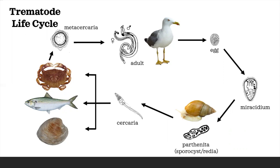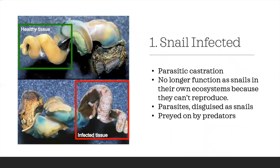Let's talk about trematode life cycles in much more detail. Let's start with when a snail becomes infected. One larva will hatch out of an egg and infect a snail. This is very bad news for the snail. From this moment on, the snail will become castrated, which means that they will never again make any more snail babies. Instead, all the tissue that were normally healthy snail gonads will be turned into parasite tissue.